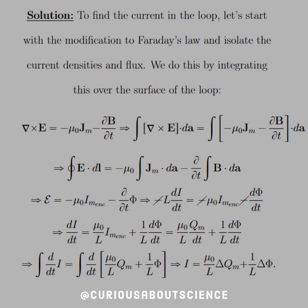We get dI/dT isolated. The current is equal to the change — that should be dQM/dT plus 1 over L times d-phi/dT. Since all of this is a function of time, we factor the derivative out and take the integrals. We find that I is equal to mu-naught over L times delta-QM, plus 1 over L times delta-phi. Differential equations — your friend.